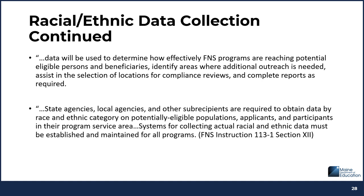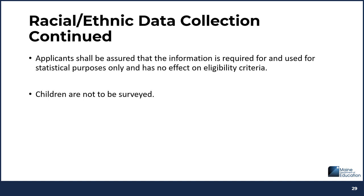Data will be used to determine how effectively FNS programs are reaching potentially eligible persons and beneficiaries, identify areas where additional outreach is needed, assist in the selection of locations for compliance reviews, and complete reports as required. State agencies, local agencies, and other subrecipients are required to obtain data by race and ethnic category on potentially eligible populations, applicants, and participants in their program service area. Systems for collecting actual racial and ethnic data must be established and maintained for all programs. Children are not to be surveyed.